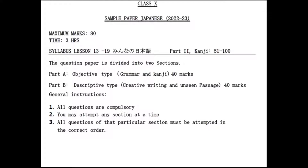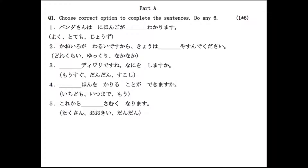Let me begin with the pattern for this year. The question paper is divided into two sections A and B. Part A has objective type questions covering grammar and kanji for 40 marks, and Part B has descriptive type questions covering creative writing and unseen passages for 40 marks. So the maximum marks will be 80 and you will be given 3 hours to complete the paper. Now let me go through the questions one by one.